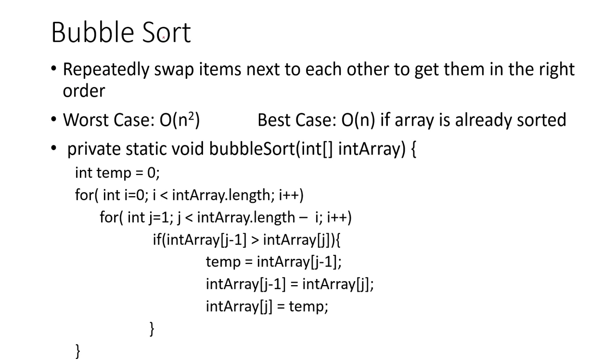So first we'll discuss bubble sort. This is where we repeatedly swap items that are next to each other to get them in the right order. So the worst case would be Big O of n squared, meaning it will be quadratically running. And the best case, of course, would be Big O n if the array is already sorted.